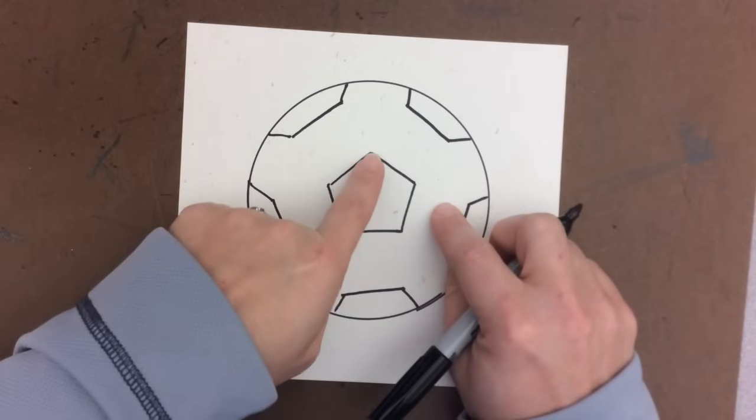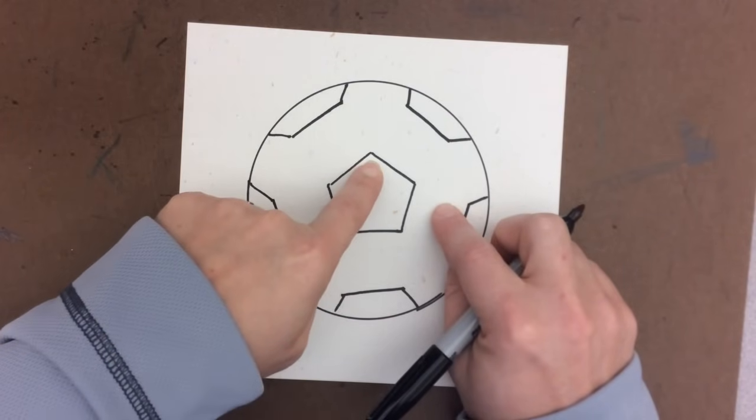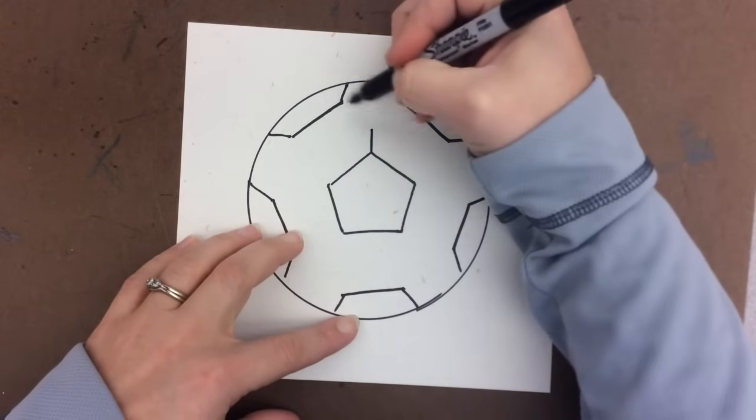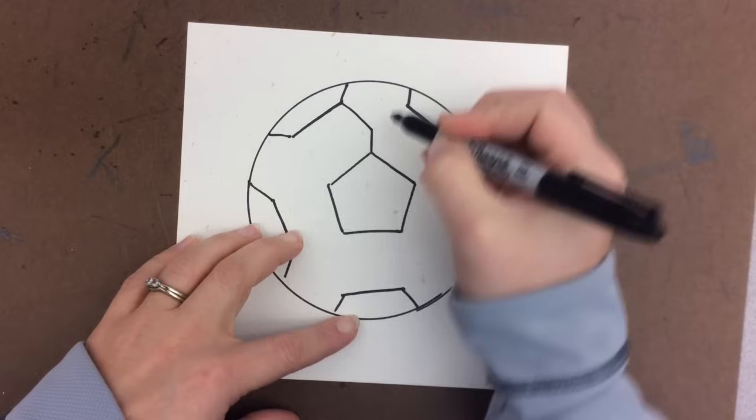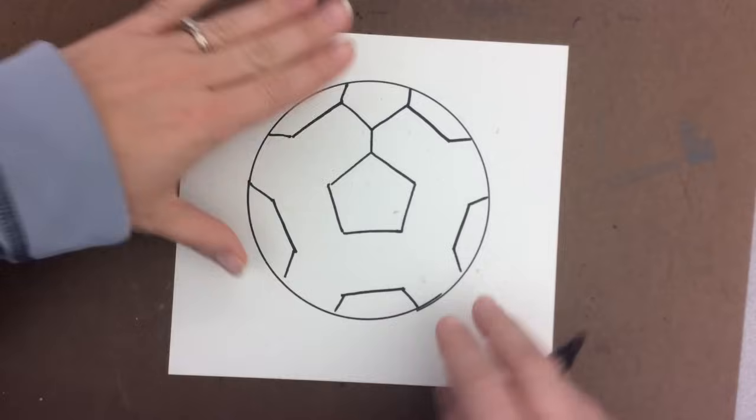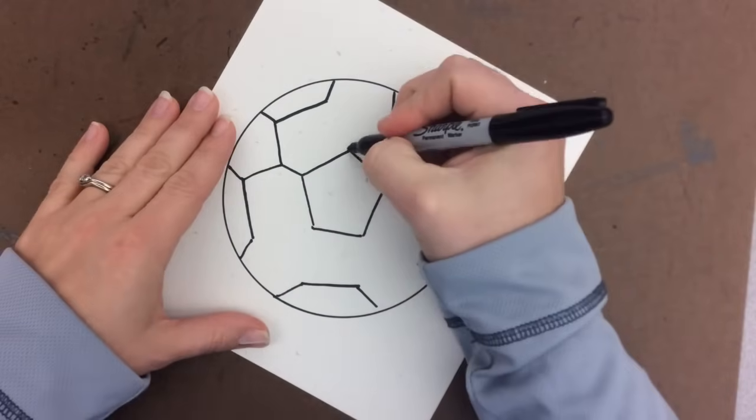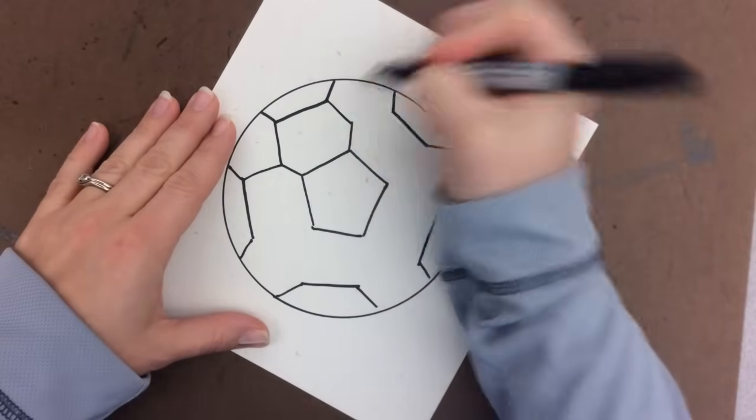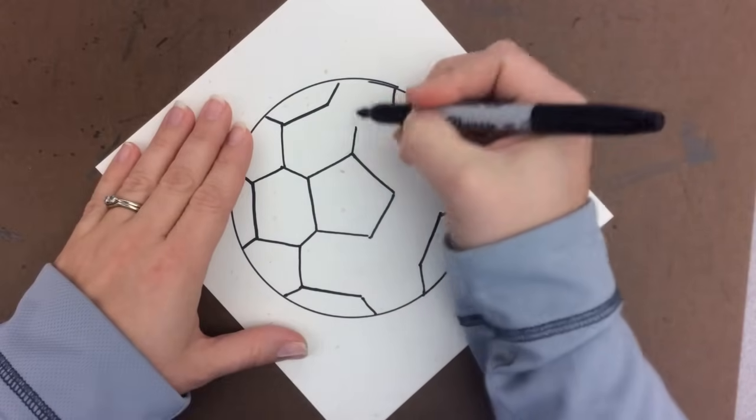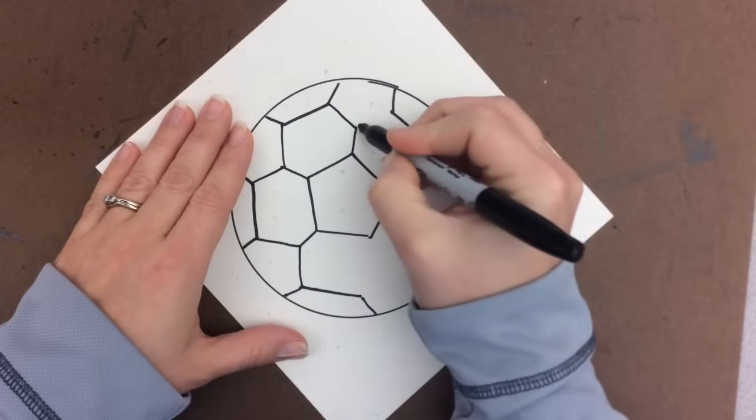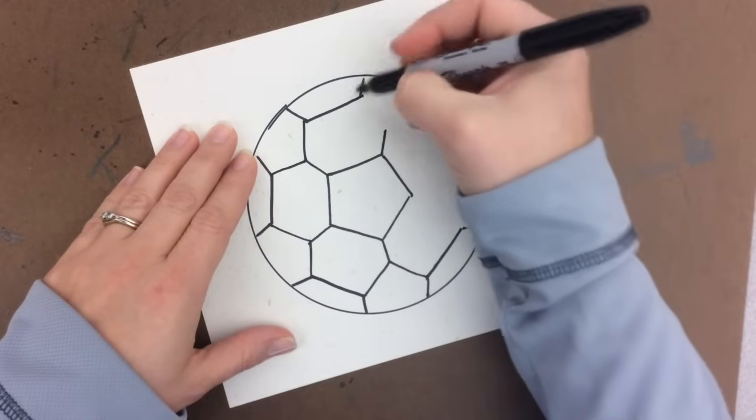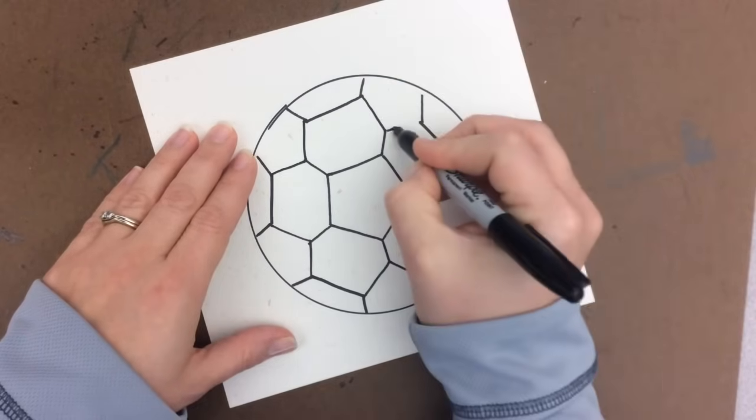From every single corner on our pentagon, we're going to draw a line up and connect it with a Y to the other shapes that we made. See that Y? Let's flip this again - line up, letter Y. Flip it, line up, letter Y. It is so starting to look like a soccer ball.